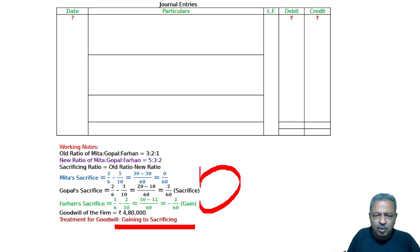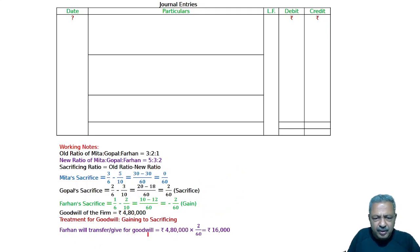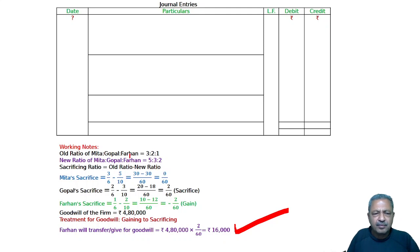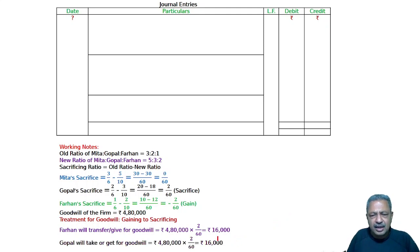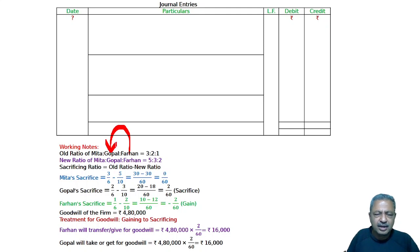Farhan's capital account is debited to Gopal's capital account. Farhan will transfer 4,80,000 × 2/60 = 16,000 for goodwill. Gopal, who is sacrificing, will receive the same: 4,80,000 × 2/60 = 16,000. So Farhan's capital account is debited to Gopal's capital account.